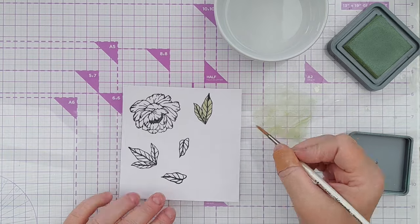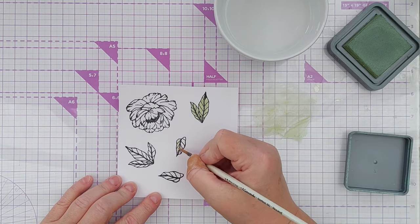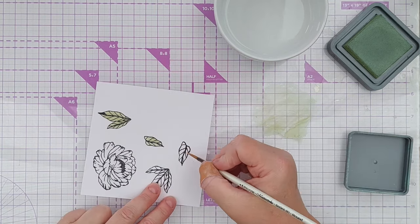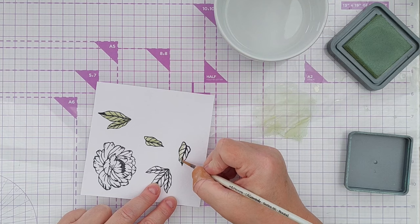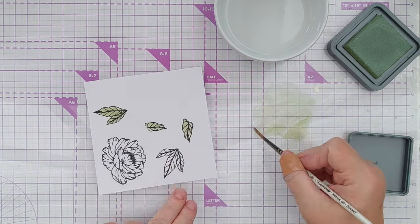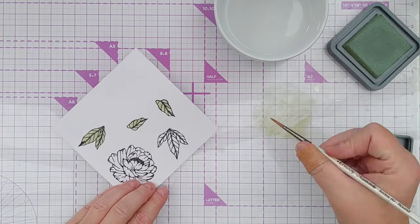The thing I like about clear embossing over black ink and then watercoloring is that the clear embossing, because it's slightly raised and resists the water in the watercolor, acts as a bit of a barrier.